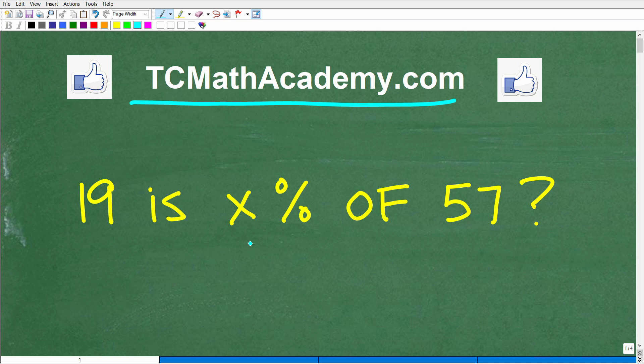It says 19 is X percent of 57. Okay, so feel free to use a calculator. If you can figure this out, go ahead and put your answer into the comment section. I'm going to show you the correct answer in just one second. Then, of course, we're going to walk through how to approach this problem and solve it step by step.